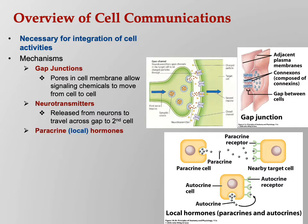Paracrines are local transmitters from one cell to another. You see in the bottom right a paracrine cell releasing paracrines. Nearby cell, paracrine receptors — that's how one cell talks to another. Notice also the autoreceptors; that's how you can control the degree of communication.